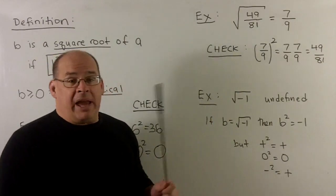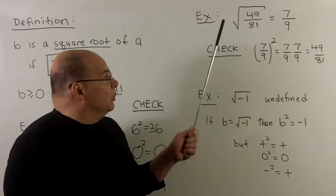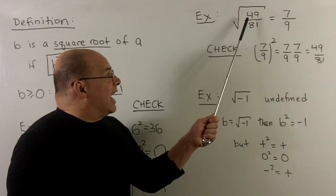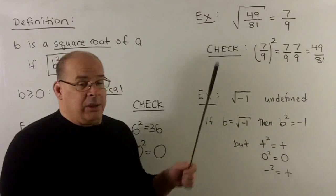numerator and denominator are going to have to square up to numerator and denominator. So the 7 will square up to 49, the 9 will square up to 81.